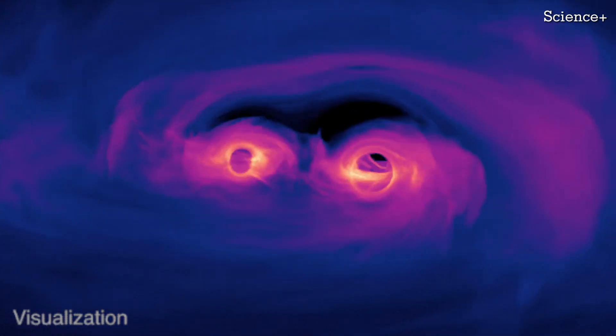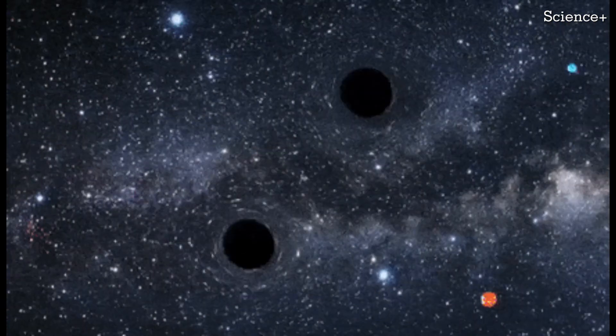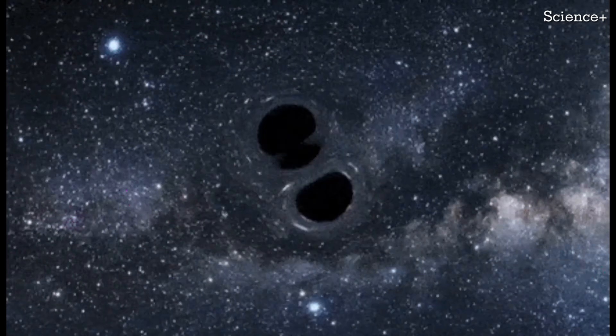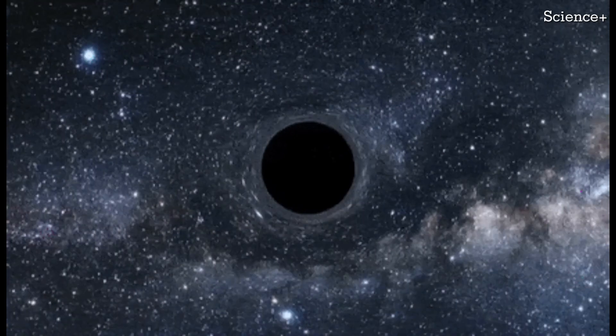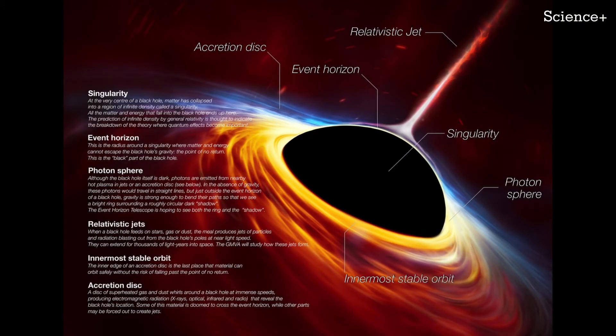The newly released image of NGC 7727, which is located about 89 million light years from Earth, was captured using the Focal Reducer and Low Dispersion Spectrograph 2 (FORS2) instrument, which is part of the Very Large Telescope (VLT) located in northern Chile.